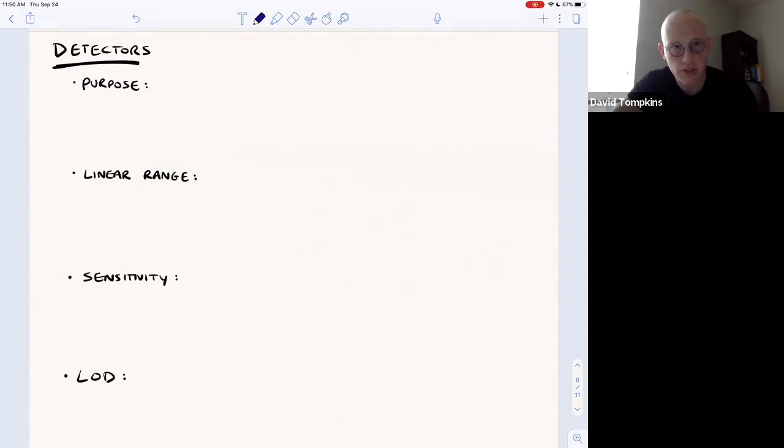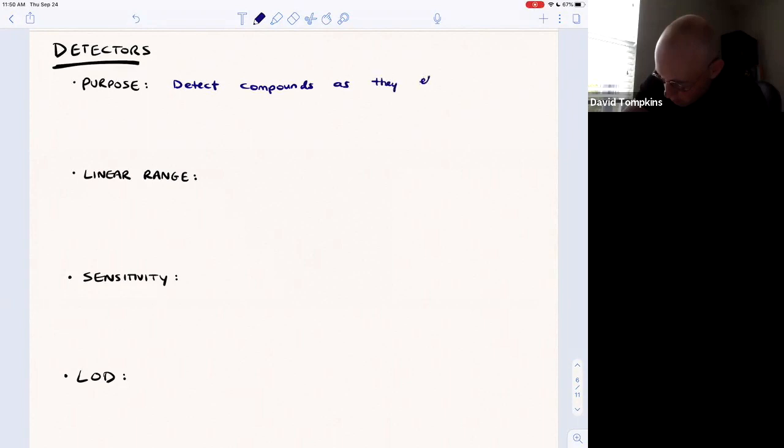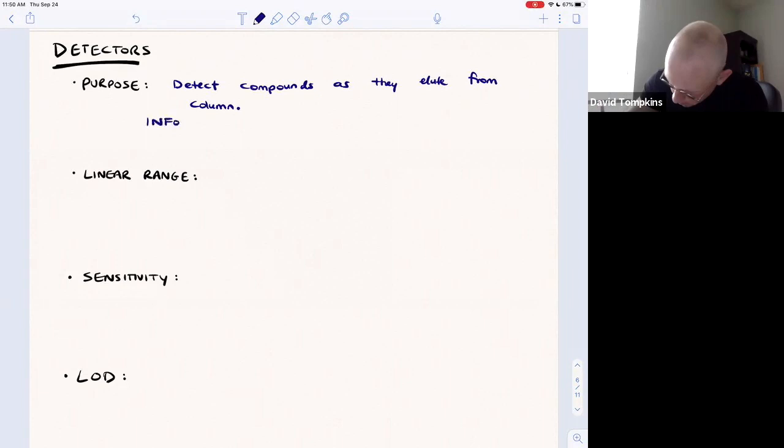Detectors, of course, are going to be used to give us information about two things. They're going to detect compounds as they elute from the column and they can tell us about the retention time.